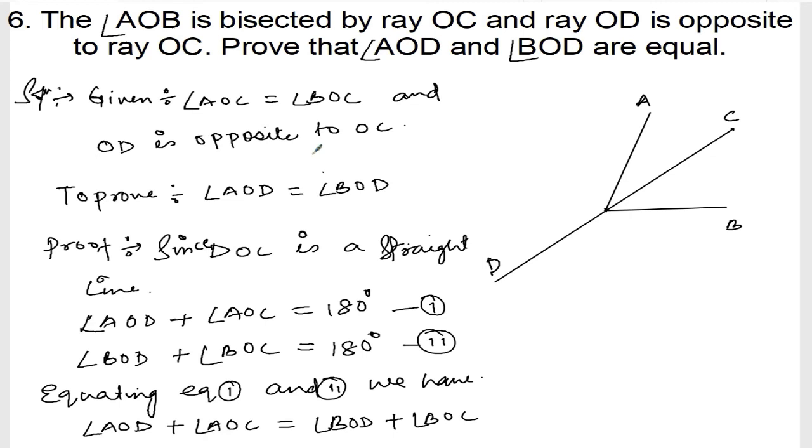So we know AOC and BOC are equal. So these two are equal, so I can cancel. Since AOC is equal to BOC, I can cancel. So from here.